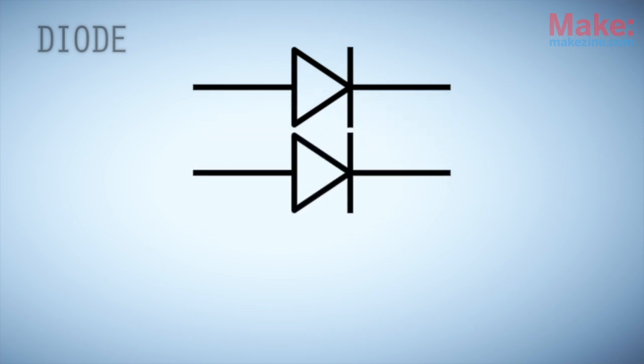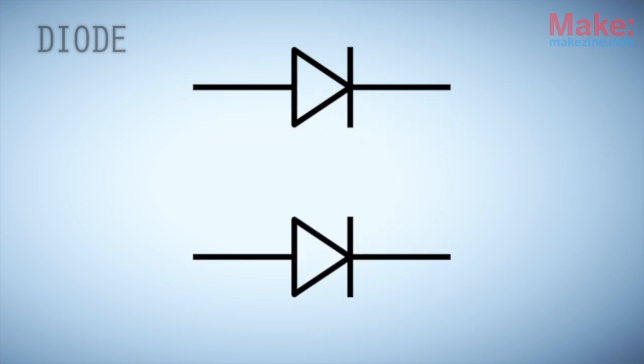If we add two small arrows to the diode symbol, like so, we have the symbol for the ever-popular light emitting diode.